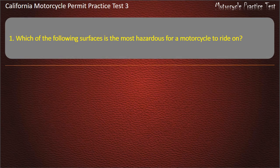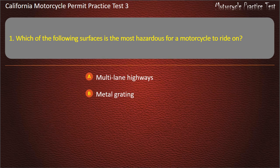Question 1. Which of the following surfaces is the most hazardous for a motorcycle to ride on? Multi-lane highways, metal grating, gravel roads, or back lanes. Answer: Gravel roads.